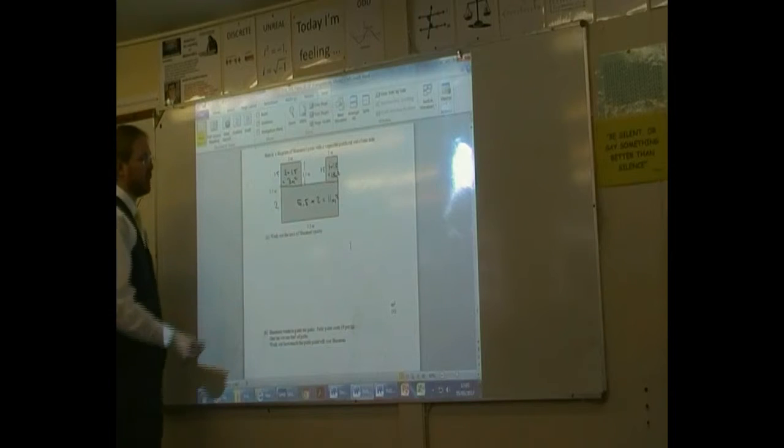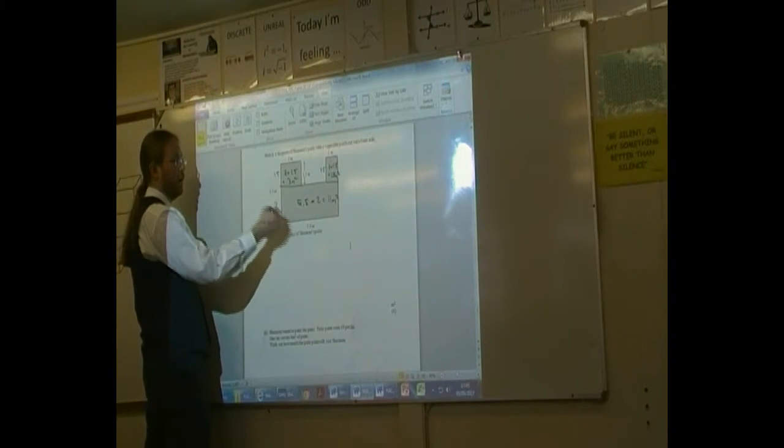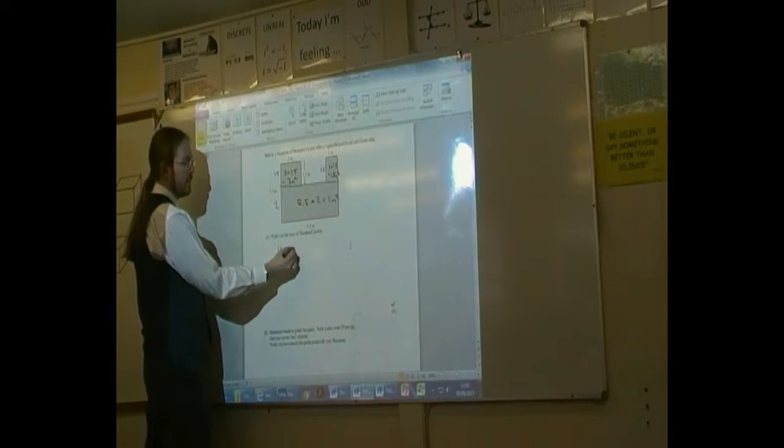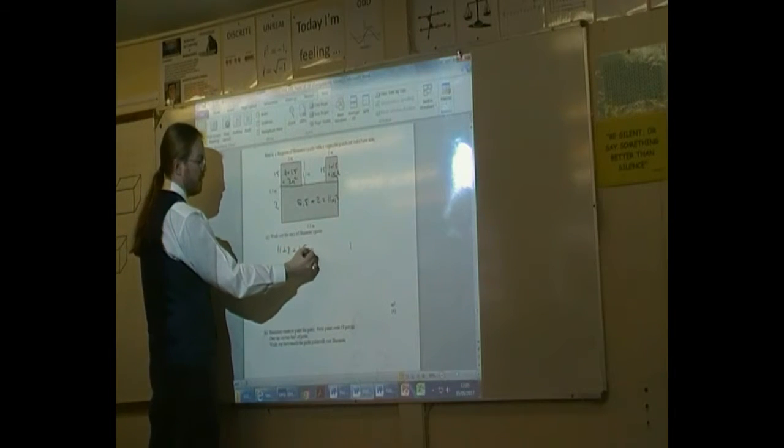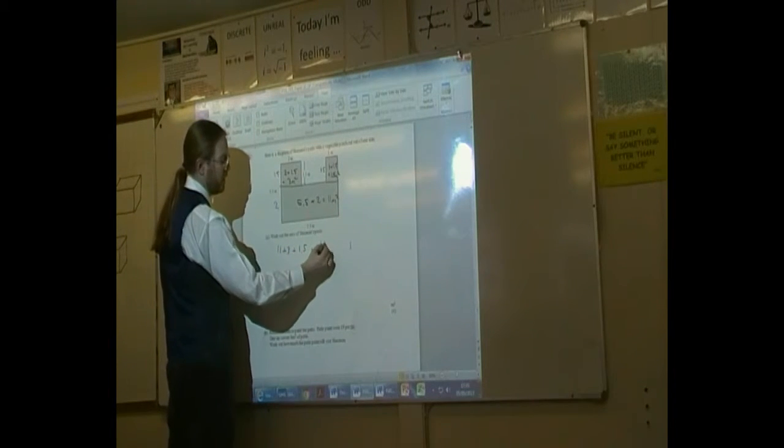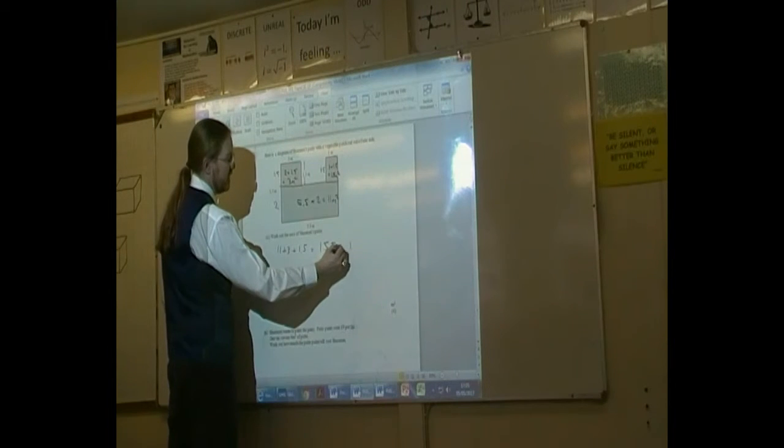If we add those together, that gives us the total area of our whole patio. We do 11, plus 3, plus 1.5, which comes to 15.5 metres squared.